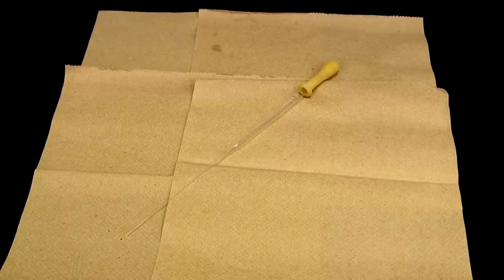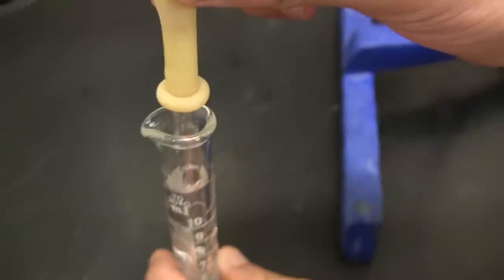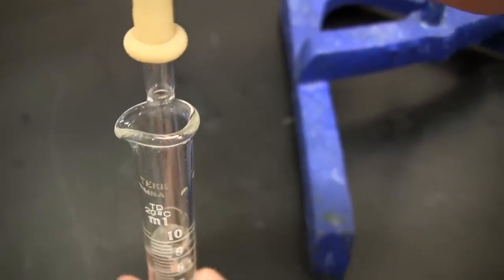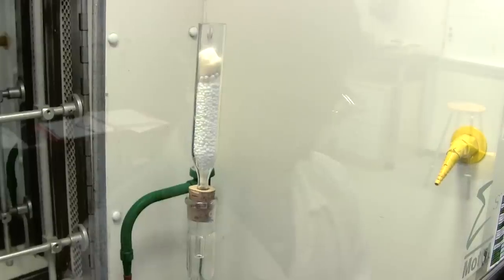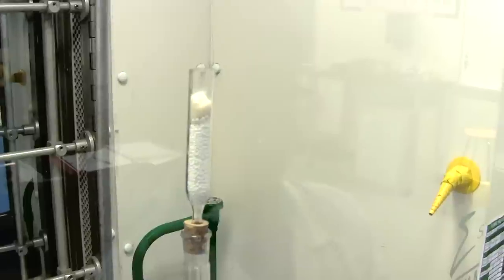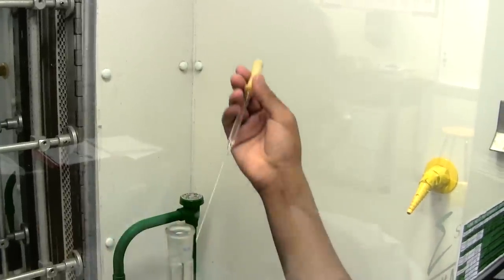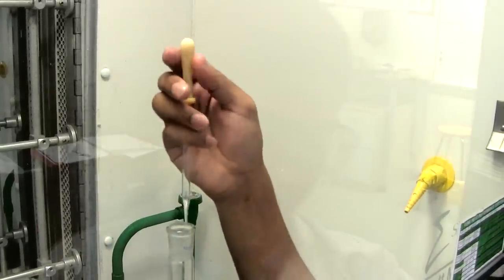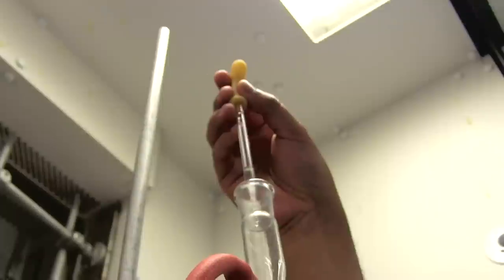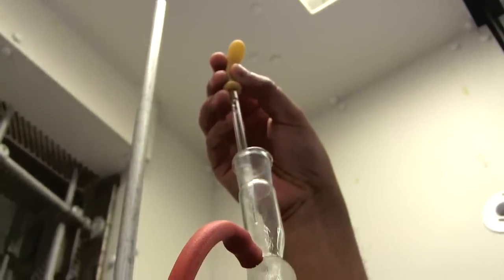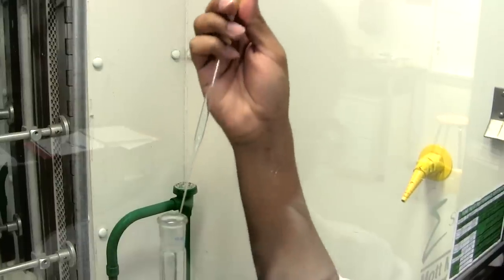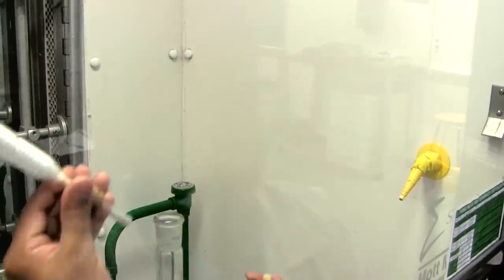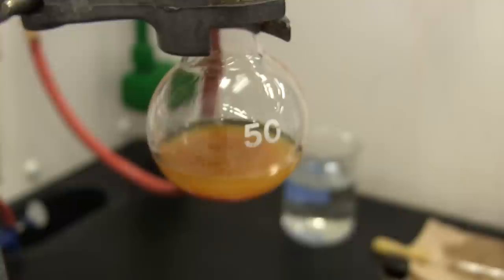Use a clean and new Pasteur pipette to obtain the feeding solution. The feeding solution will be added dropwise, so you should fill the pipette only slightly above the tip. To add the feeding solution into the reaction mixture, use either your left or right hand to remove the drying tube as shown. Now using your other hand, add the solution dropwise. The solution should be added slowly so that the reaction proceeds in the desired manner.